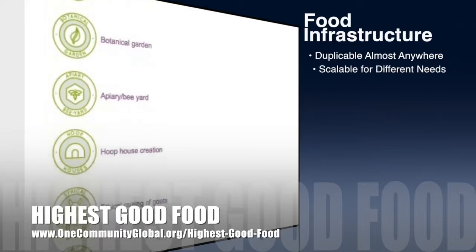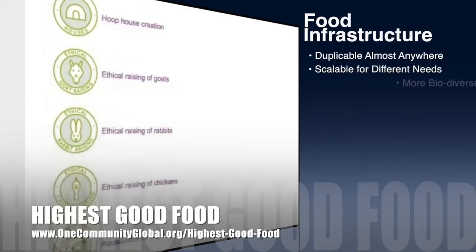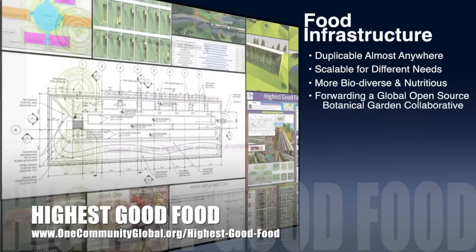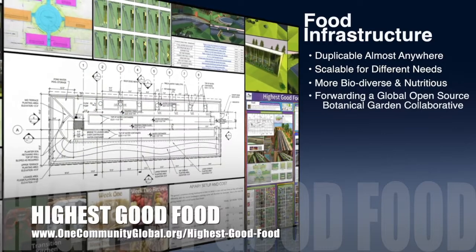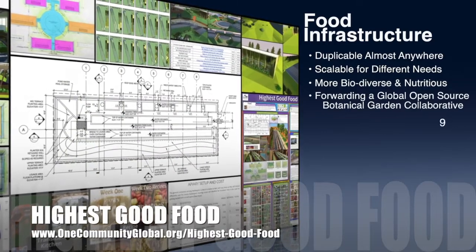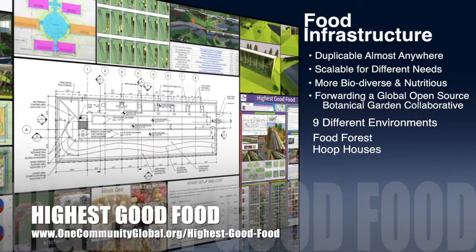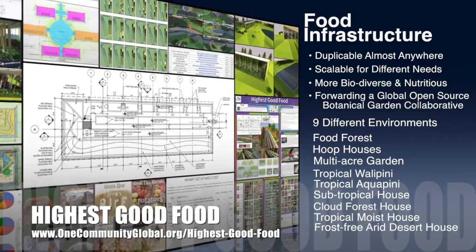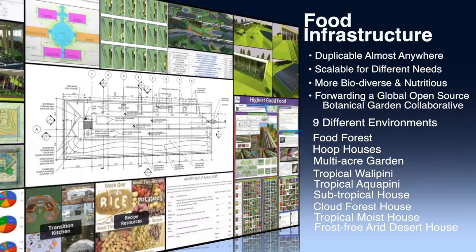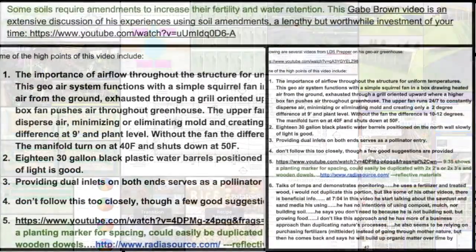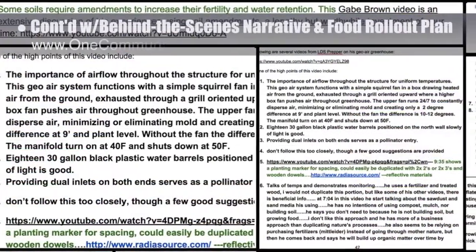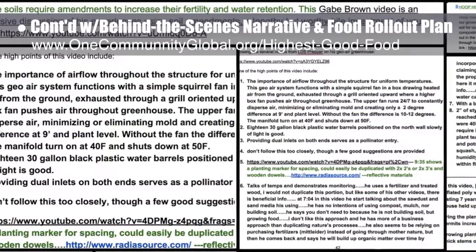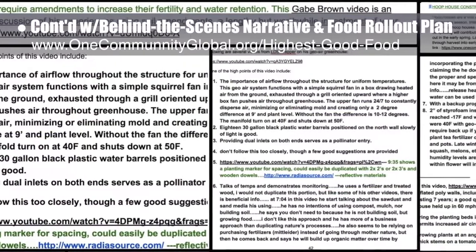One Community's approach to highest good food is duplicable almost anywhere, scalable for different needs, more biodiverse and nutritious, part of forwarding a global open source botanical garden collaborative, and includes nine different free shared and duplicable growing environments. This week the core team continued writing the behind-the-scenes narrative and detailed food rollout plan for the various stages of development.